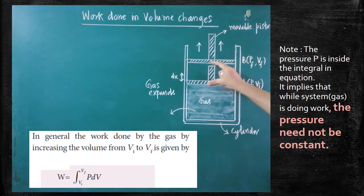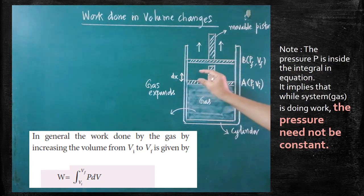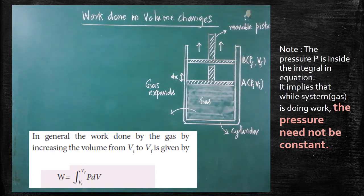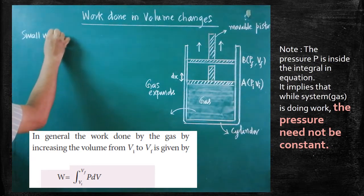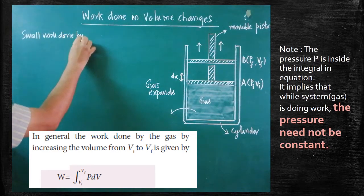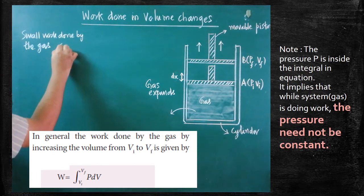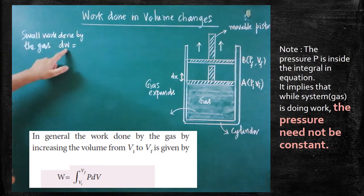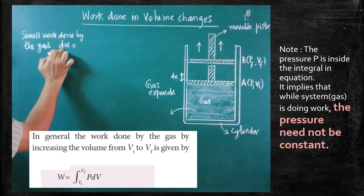Before calculating the total work done, first we have to assume a small displacement occurred here. The small displacement can be taken as dx. For that, we have to calculate the small value of work done. The small work done by the gas must be calculated — that can be written as dW. Since it is small work done, we write it as dW. When the piston moves through a small distance dx, the work done is dW.